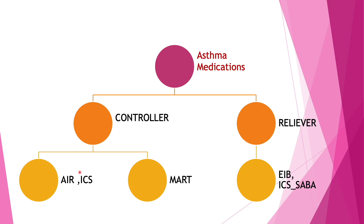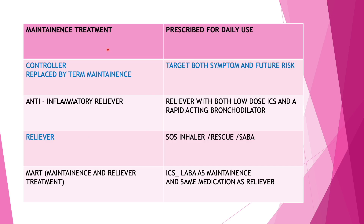The old terminology we are all used to is controller and reliever. Anti-inflammatory relievers and inhaled corticosteroids can be taken SOS or as controllers. Just as you can take an ICS as an anti-inflammatory reliever SOS, you can also take it in a controller form, or as maintenance and reliever therapy. For relievers, they are given specifically to patients who may have exercise-induced bronchoconstriction, and such patients may be given ICS with SABA as a reliever.